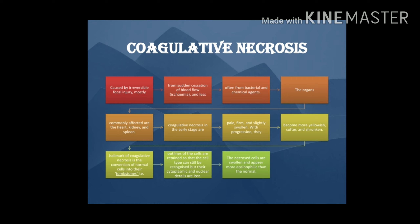In the early stage, coagulative necrosis is firm and slightly swollen, but progressively it becomes softer and sunken. When these changes occur, there are changes in the nucleus — whatever chromatin is present in the nucleus and cytoplasm undergoes a degranulating, dissolving, and condensation process. During these changes in coagulative necrosis, you can still identify the structure of the cell and recognize which structure it belongs to, but the internal interior — the cytoplasm and nucleus — is lost.